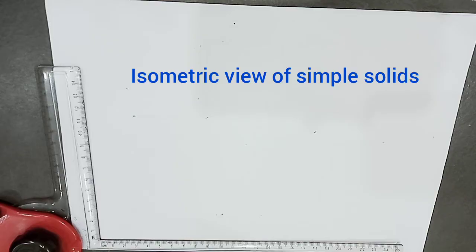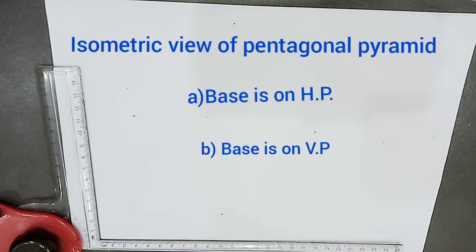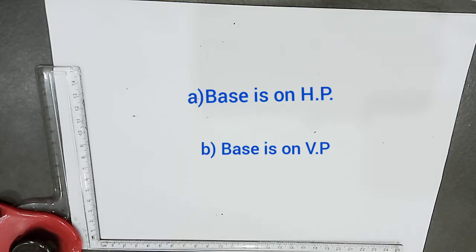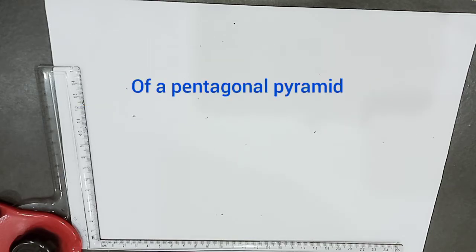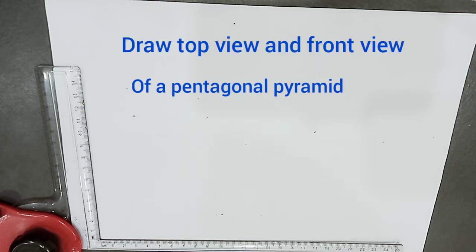Welcome to the discussion of isometric use of simple solids. Under this, we are constructing the isometric view of a pentagonal pyramid. The given problem is: draw the isometric view of a pentagonal pyramid of base height 30 mm and axis height 60 mm, resting on its base on the HP and axis parallel to VP. The first step is to draw the orthographic projections of the pentagonal pyramid, that is, drawing the top view as well as the front view.